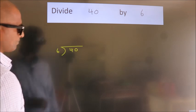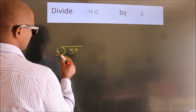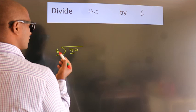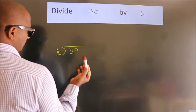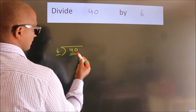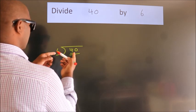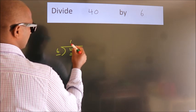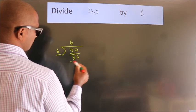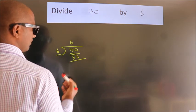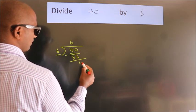Next. Here we have 4, here 6. 4 is smaller than 6, so we should take 2 numbers: 40. A number close to 40 in the 6 table is 6 times 6 equals 36. Now we should subtract. We get 4.